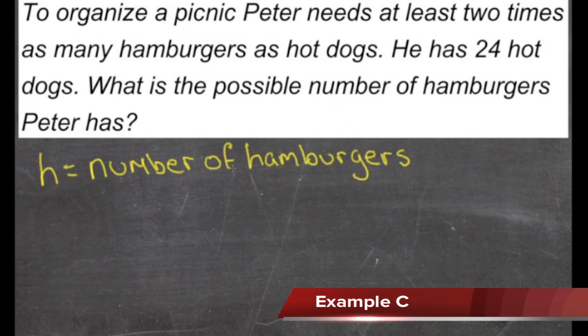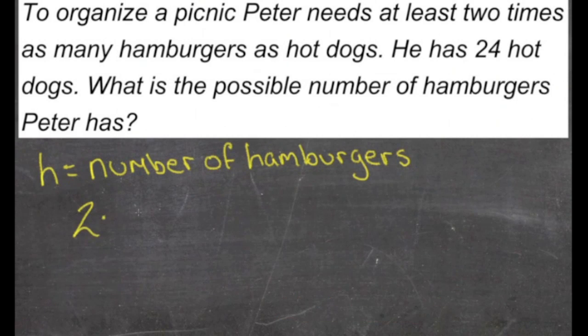We know that the number of hamburgers has to be at a minimum twice the number of hot dogs. So we're going to say that he has to have at least 2 times 24 as his number of hamburgers. That means that the number of hamburgers is going to be greater than or equal to 2 times 24. 2 times 24 is 48.